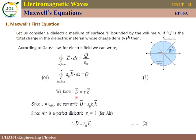Next, we know the displacement vector D vector equals permittivity into electric field, so D vector equals epsilon into E vector. This is the D vector equation. In this equation, epsilon is permittivity — the permitting ability of the material. Permittivity equals permittivity of free space epsilon naught times relative permittivity epsilon R, where epsilon R equals epsilon of the medium divided by epsilon of free space.